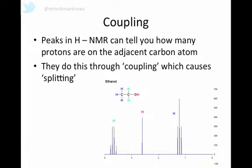There's something else that's a little bit odd with proton NMR that gives us a bit more information, and that's something called coupling. The peaks in proton NMR don't just tell you about the protons that the peak is for. They also tell you how many protons are in the adjacent carbon atom. The two key terms here are coupling, which causes splitting. Don't worry if you don't get it yet.